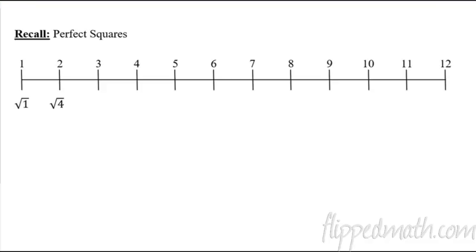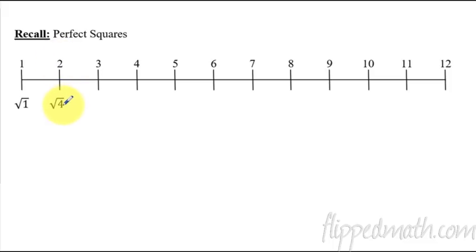Today we're talking about radicals, but before that we've got to focus in on perfect squares. You've got to know these things really, really well. So what in the world is a perfect square? Perfect squares are when we take a number and we multiply it by itself — in other words, you square it. So one squared is one, two squared is four. That means the square root of four is also two.